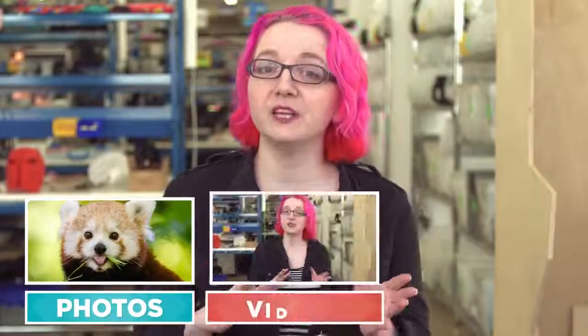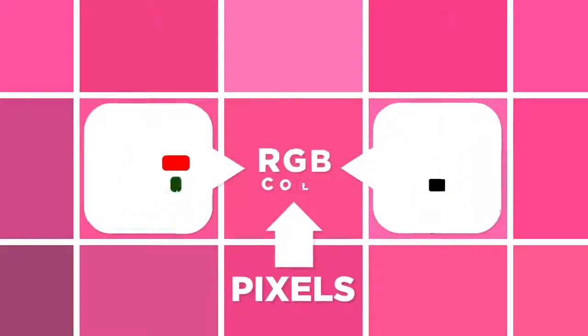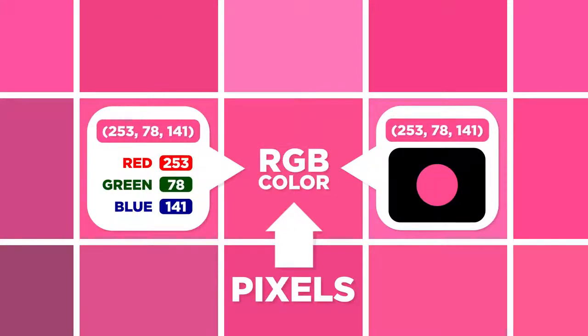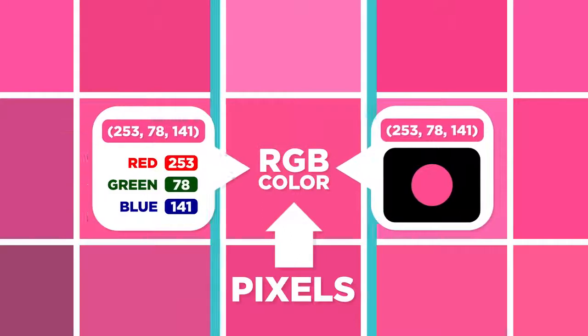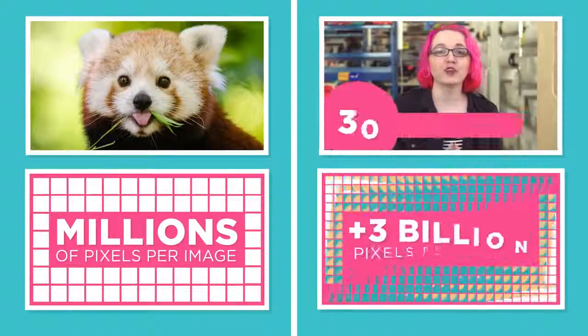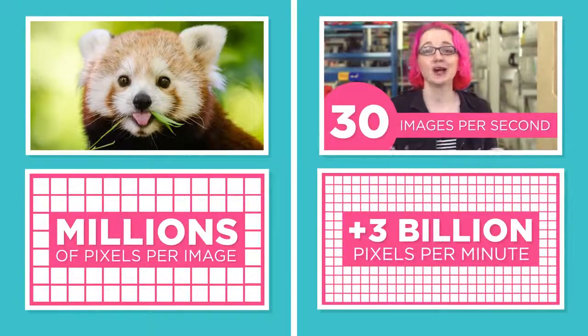Now, let's consider photos, videos, and all the graphics you see on a screen. All of these images are made out of tiny dots called pixels, and each pixel has a color. Each of those colors can be represented with numbers. When you consider that a typical image has millions of these pixels, and a typical video shows 30 images per second, we're talking about a lot of data.